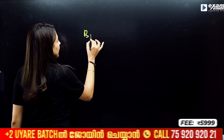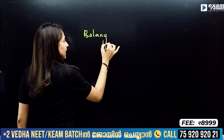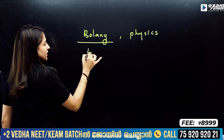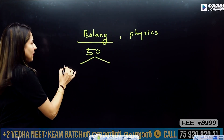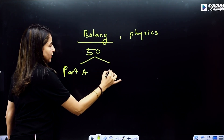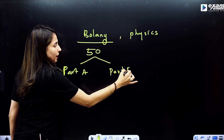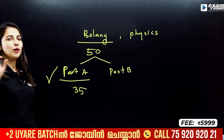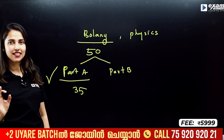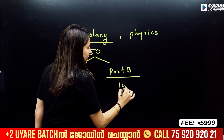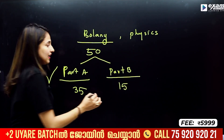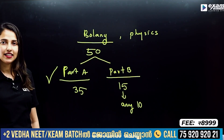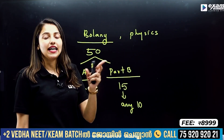In total, the exam covers Botany, Physics, and other subjects. For each subject, you have two parts. There is Part A and Part B. In Part A, you have 35 questions — this is compulsory and there are no options; all questions must be answered. In Part B, you have to answer 10 questions out of the options given. In total, you have to answer 45 questions.